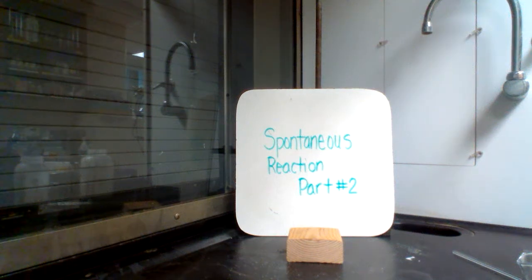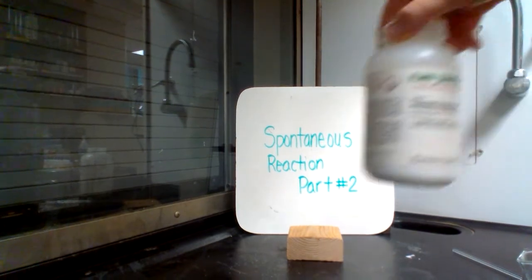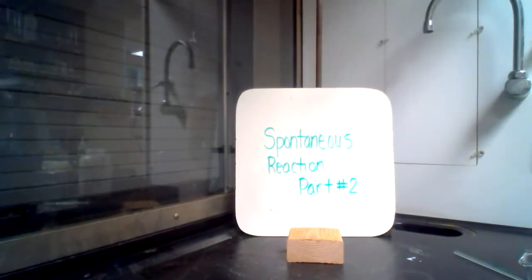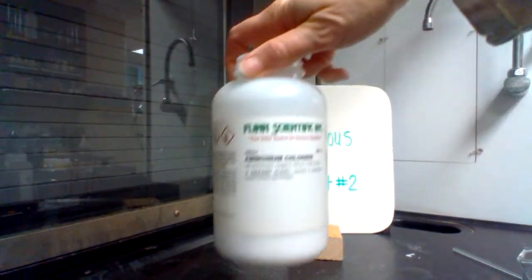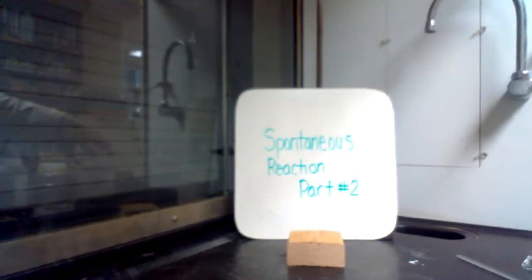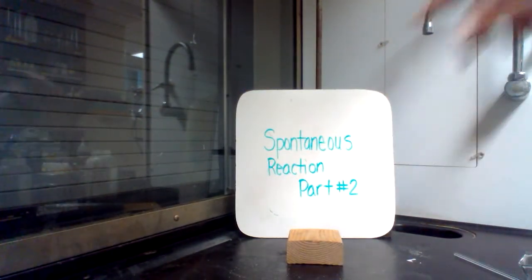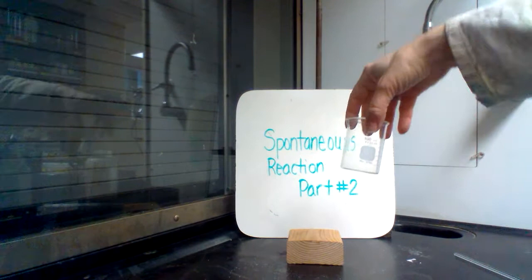For this spontaneous reaction part two, we will do a reaction that we have seen before. I'm going to use barium hydroxide and some ammonium chloride. I have a wooden block and a small beaker.